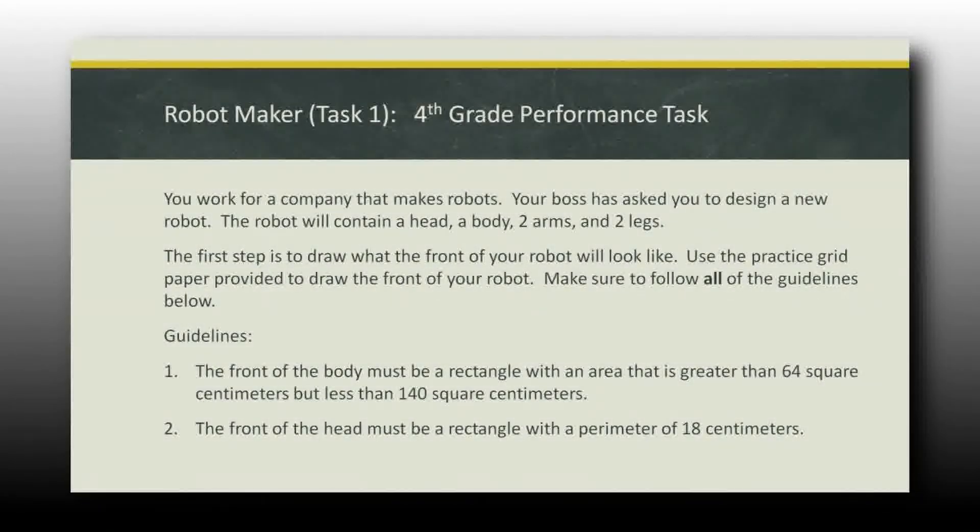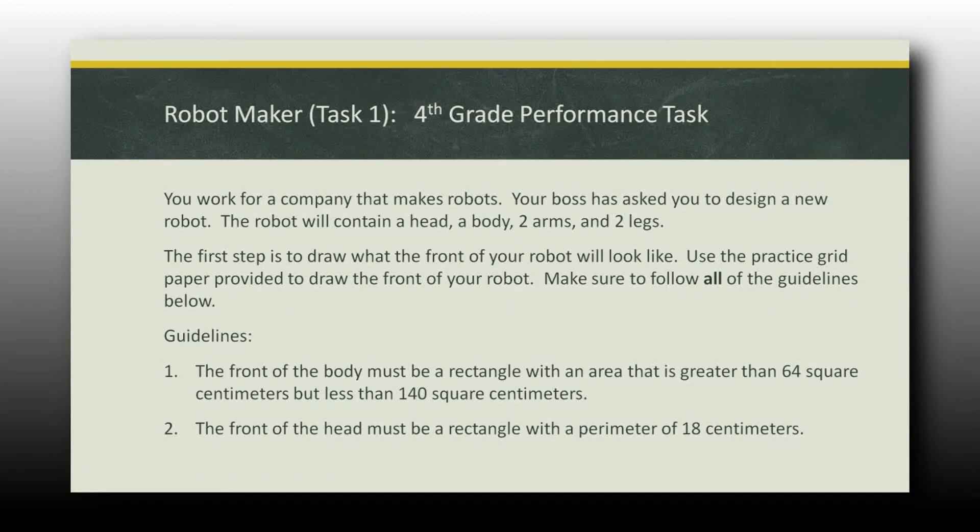Just to give you an example. You work for a company that makes robots, and your boss asks you to design a new one. It's going to have a head, a body, two arms, and two legs. The first step is to draw what your robot is going to look like. You're going to get some grid paper, and you're going to go ahead and draw this. The front of the body must be a rectangle, so students need to know what a rectangle is, with an area, they need to know what area is, that is greater than, they need to understand greater than in comparing numbers, 64 square centimeters, they're going to have to know something about centimeters, but less than 140 square centimeters. The front of the head must be a rectangle with a perimeter of 18. So now they need to know exactly what perimeter is and exactly how much that perimeter is going to be.